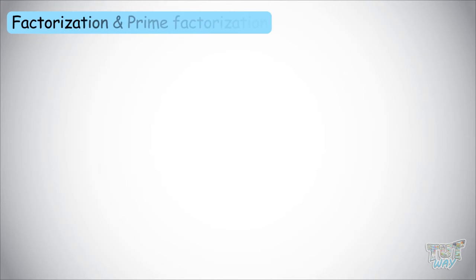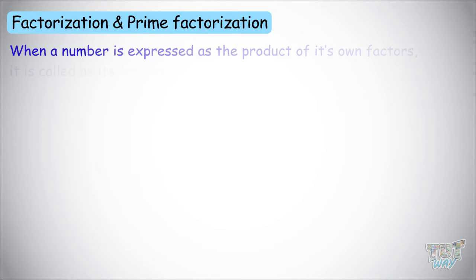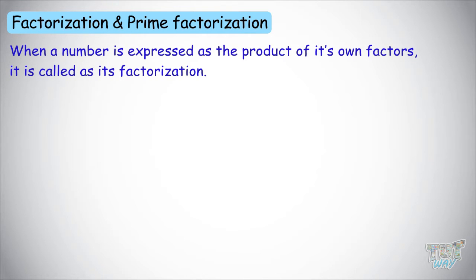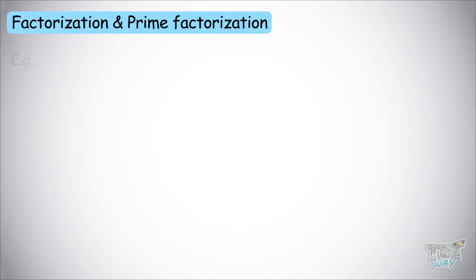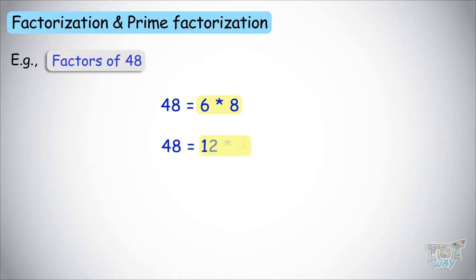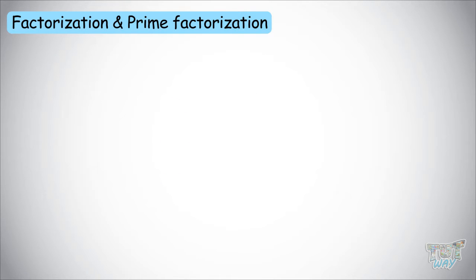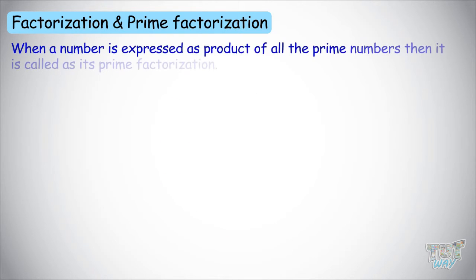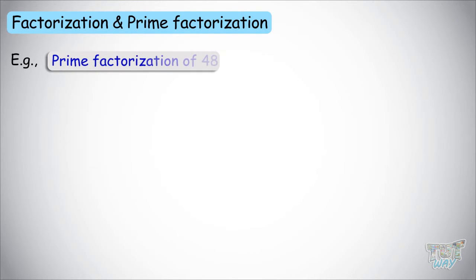Now, what is factorization and prime factorization? When a number is expressed as a product of its own factors, it is called factorization. For example, 48 can be factorized as 6 times 8, 12 times 4, or 2 times 24. In the ladder method, we divide the number by only prime numbers, starting from the smallest prime number possible, and continue until we get a quotient of 1. So the prime factorization of 48 will be 2 times 2 times 2 times 2 times 3, and this all equals 48.